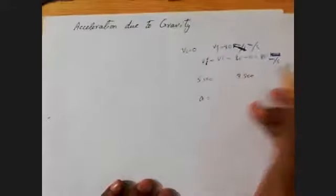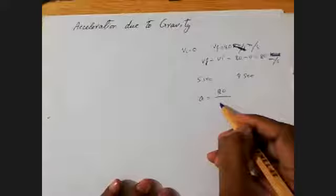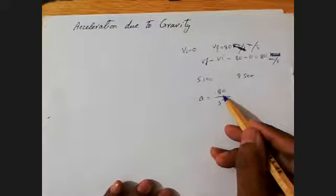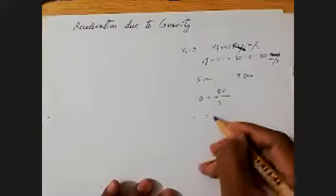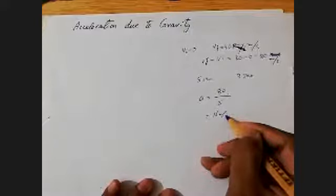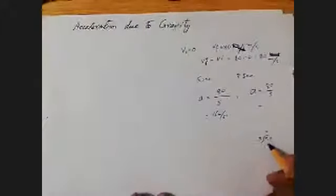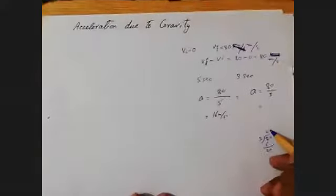So here, acceleration equals change in speed divided by time. For Mahran it is 80 over 5, which gives 16 meter per second squared. In the case of Audi, it is 80 over 3, which gives approximately 26-point-something meter per second squared. So obviously the acceleration of Audi is greater than the acceleration of Mahran because they have different engine powers.